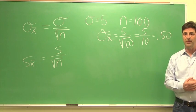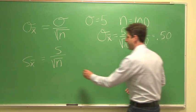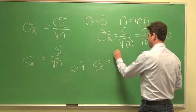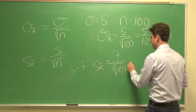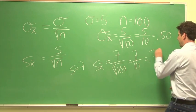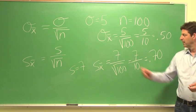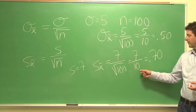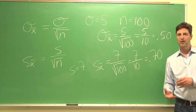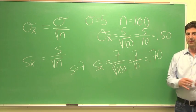Now let's suppose we don't know the population standard deviation. We're going to use the sample standard deviation, which we'll say is 7. The calculations are just the same — we substitute the sample standard deviation in there. 7 divided by the square root of 100 is 7 divided by 10, equals 0.70. The average difference between the sample means and the population mean, when samples are randomly selected and n equals 100, is 0.70 points on the driver's test.